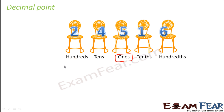These are some things which we have learned in the previous slides. 5 is at the 1's place means 5 into 1. 4 is at the 10's place means 4 into 10. 2 is at the 100's place means 2 into 100.